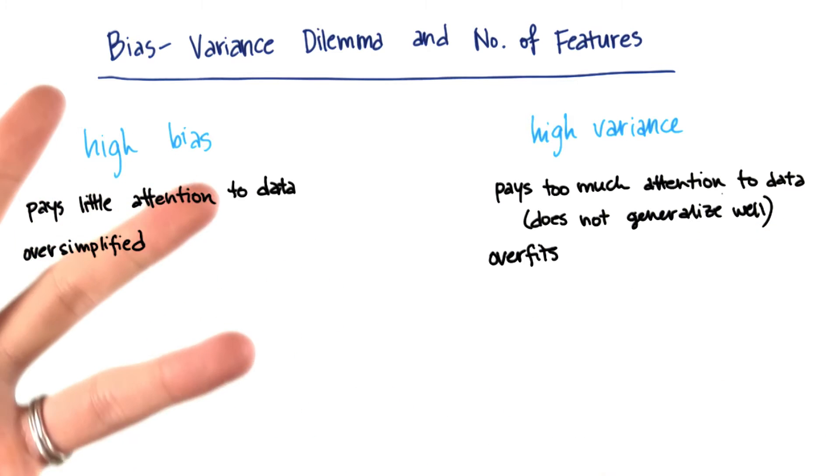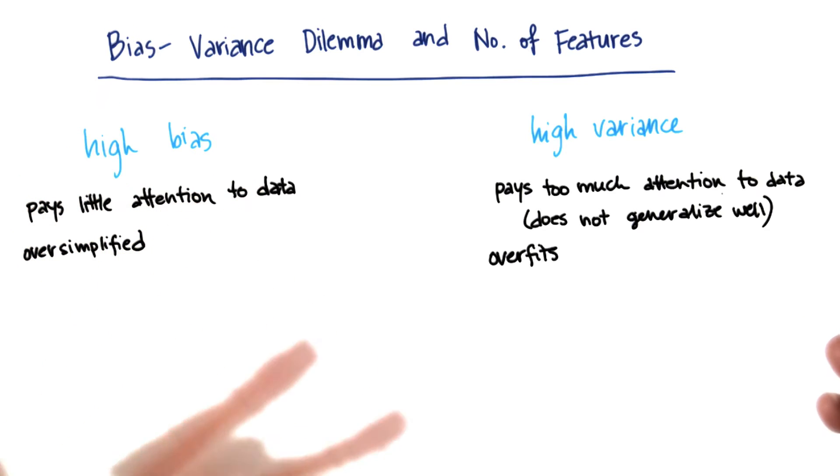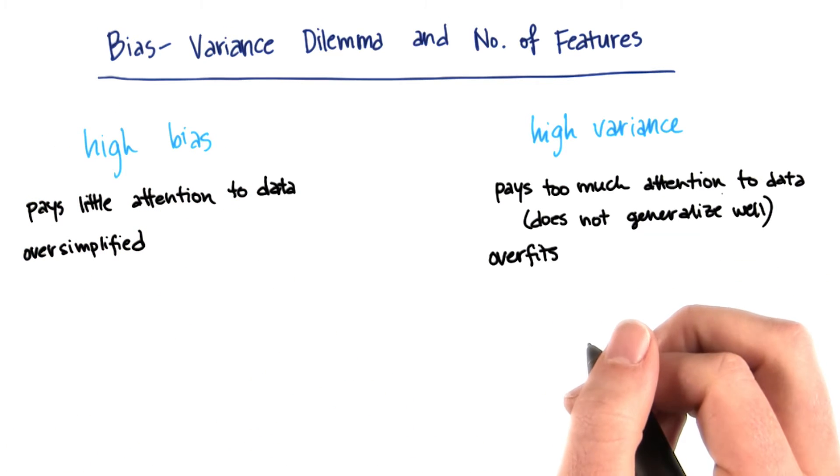As soon as it gets a new example or data point that's not exactly like one of the training examples, it doesn't really know what to do. Another way to think about this is that it's overfitting to the data.